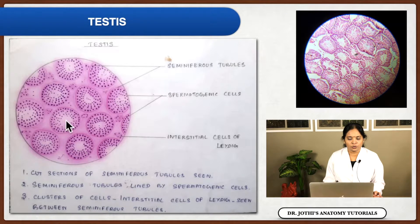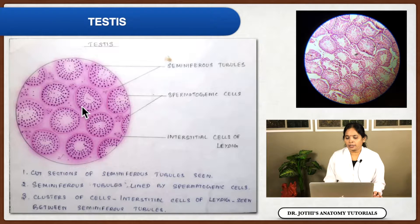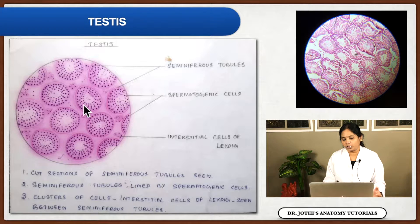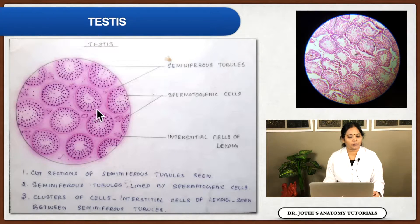You will see many sections of seminiferous tubules. Each seminiferous tubule consists of germinal epithelium, in which different stages of development occur. At the basal level, you will see type A primary spermatogonia, then primary spermatocytes, secondary spermatocytes, and then spermatids are released. Each seminiferous tubule is lined by several layers of developing spermatogonia.